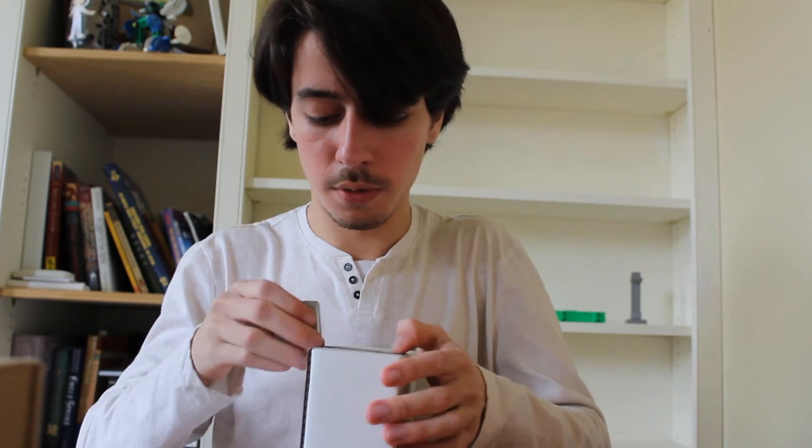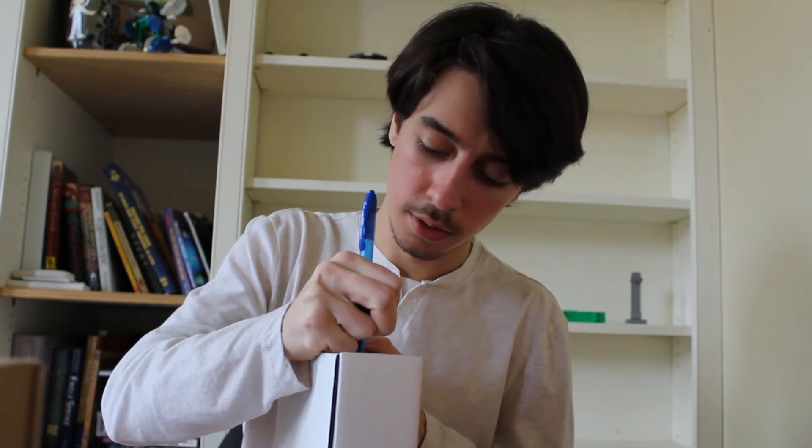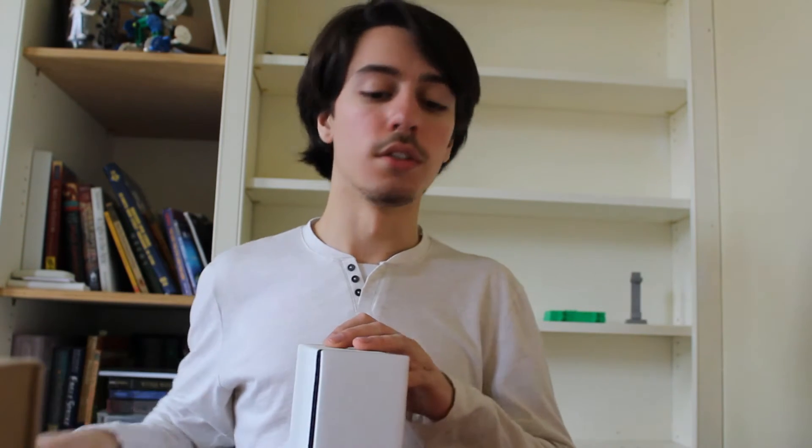And the hole doesn't have to be perfect, but we're going to just make a little X in the center. So this is 7 inches, so 3 1⁄2. And then we're just going to punch a small little hole right here. Don't make it too big.